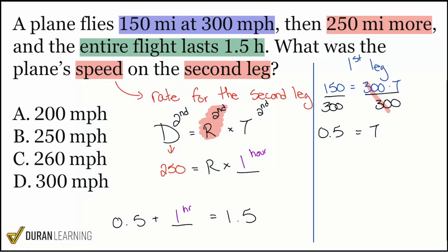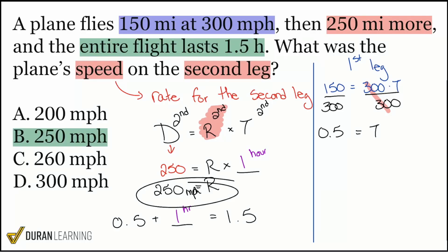Now we're good — anything times one is just going to be itself. So by default, the rate is going to be 250 miles per hour, and that drives in the correct answer: B.